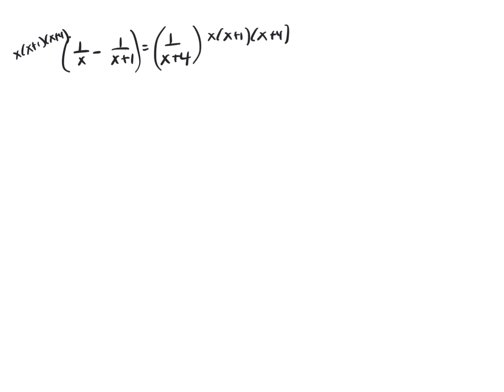When you multiply it times 1 over x, the x's cancel, and you're left with x plus 1 times x plus 4 minus. Multiply by this term. x plus 1's cancel. You're left with x and an x plus 4 with a minus sign in front. On the right side, equals, x plus 4's cancel. You're left with x times x plus 1.